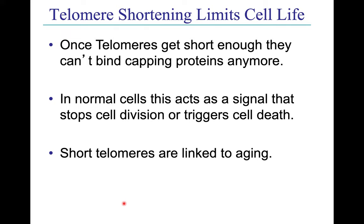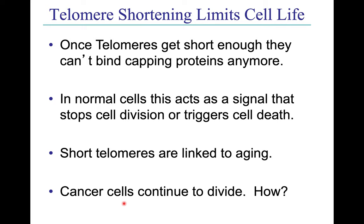Telomere shortening is linked pretty directly to aging. As we get old enough, many of our cells have gone through those 50 or 60 division cycles and start dying. That's why as you get older you literally start losing muscle mass — your cells are dying due to this process.